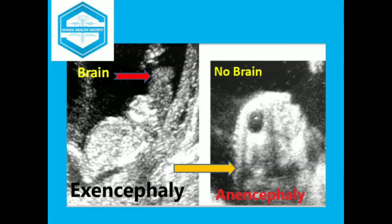This image is labelled as exencephaly, as brain tissue is present while the vault is absent. After some time, the brain will be dissolved and disappear, and it will then be labelled as anencephaly — vault absent and brain also absent.